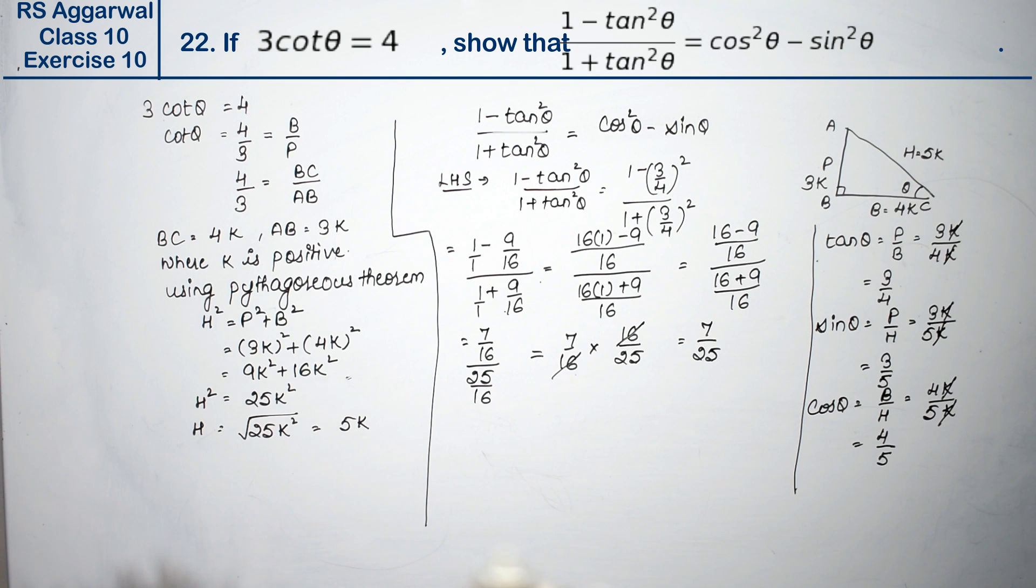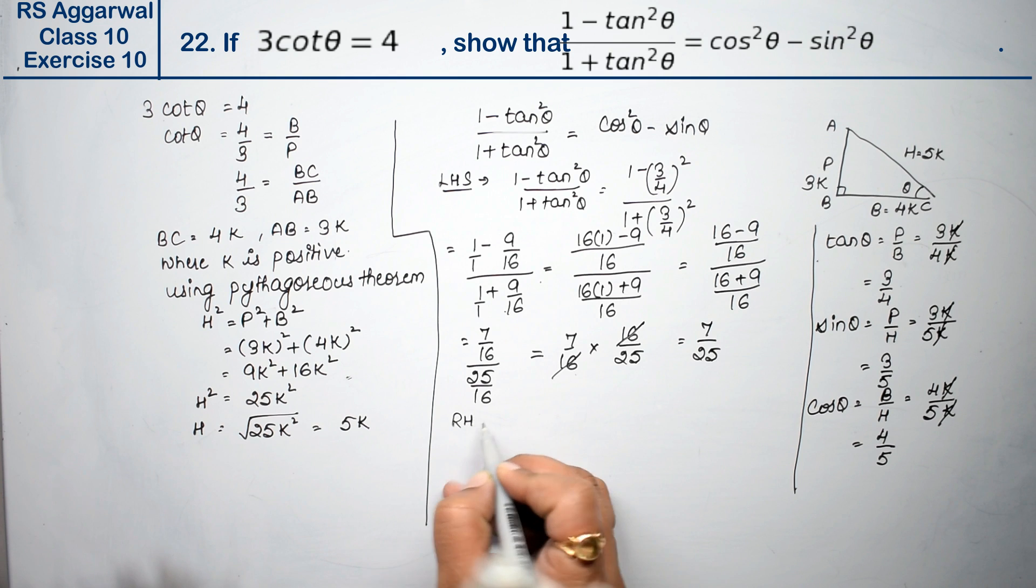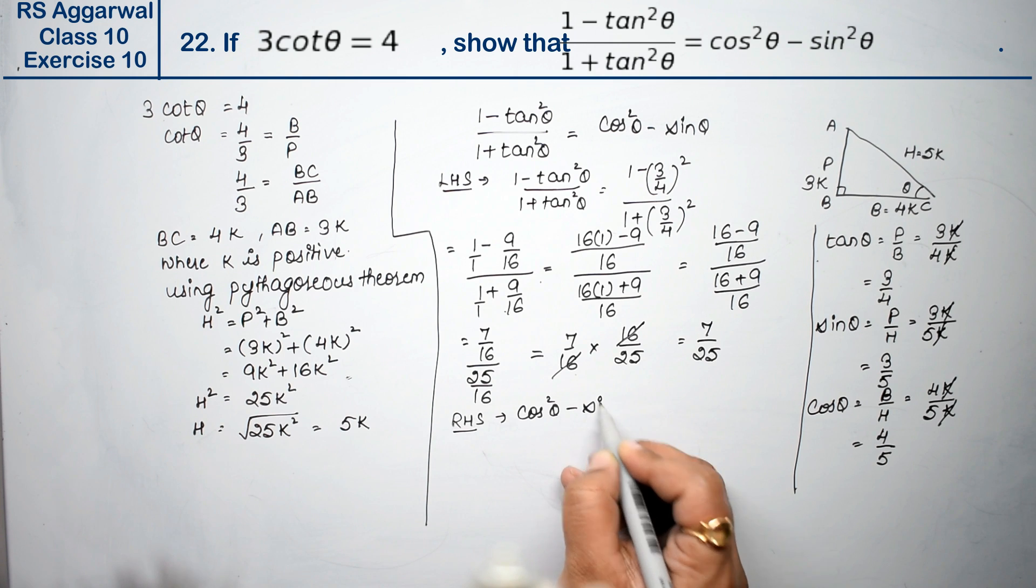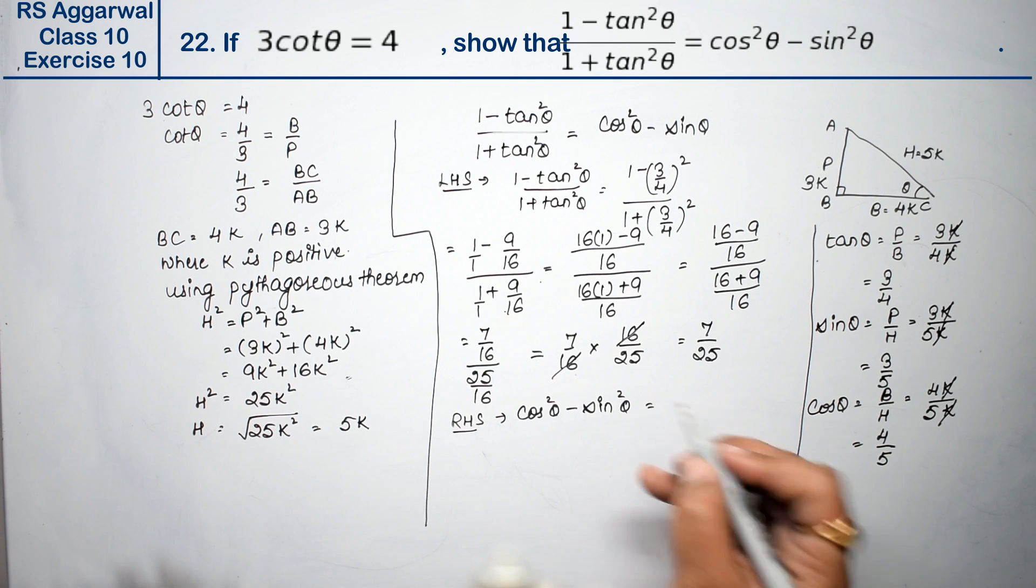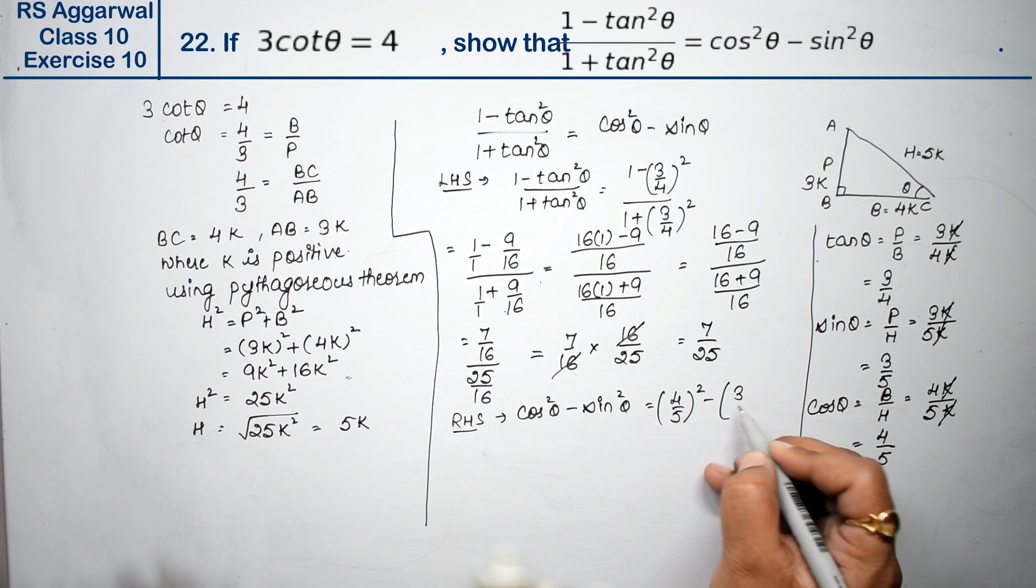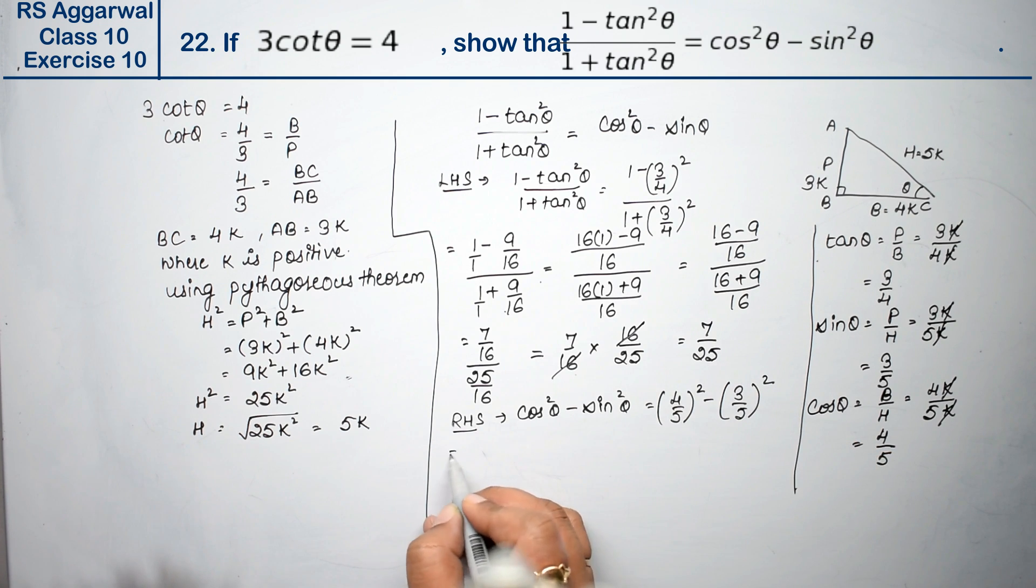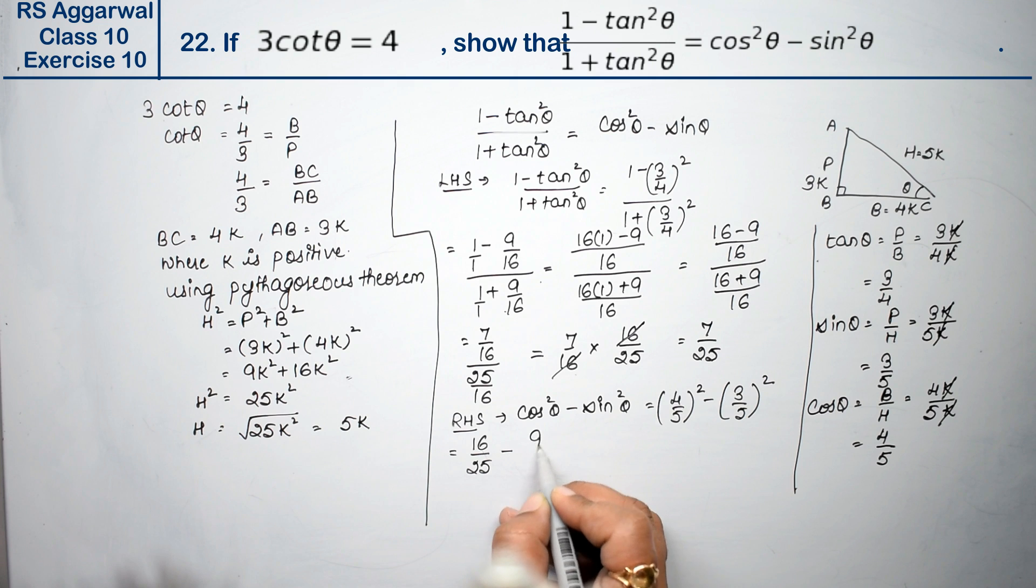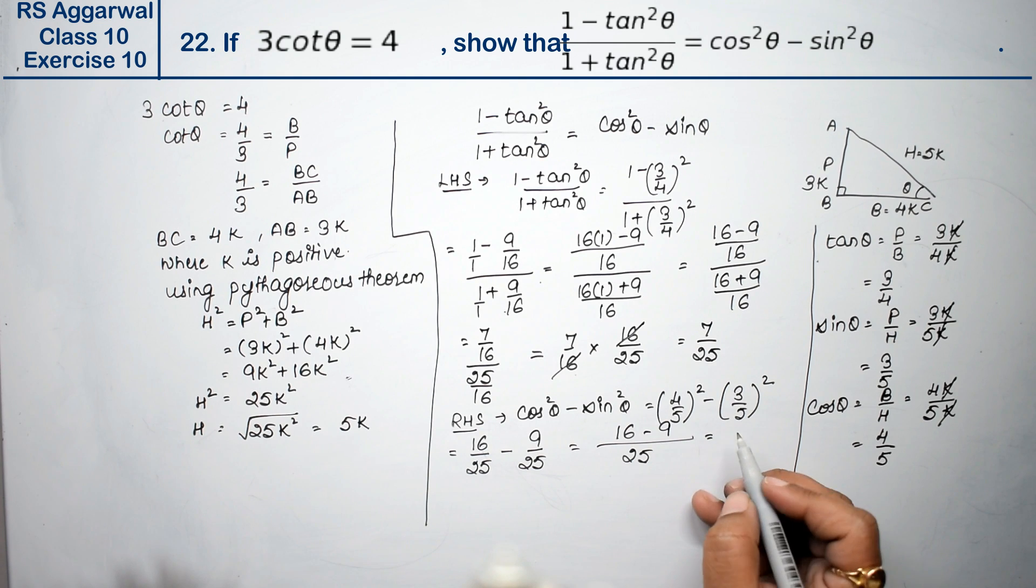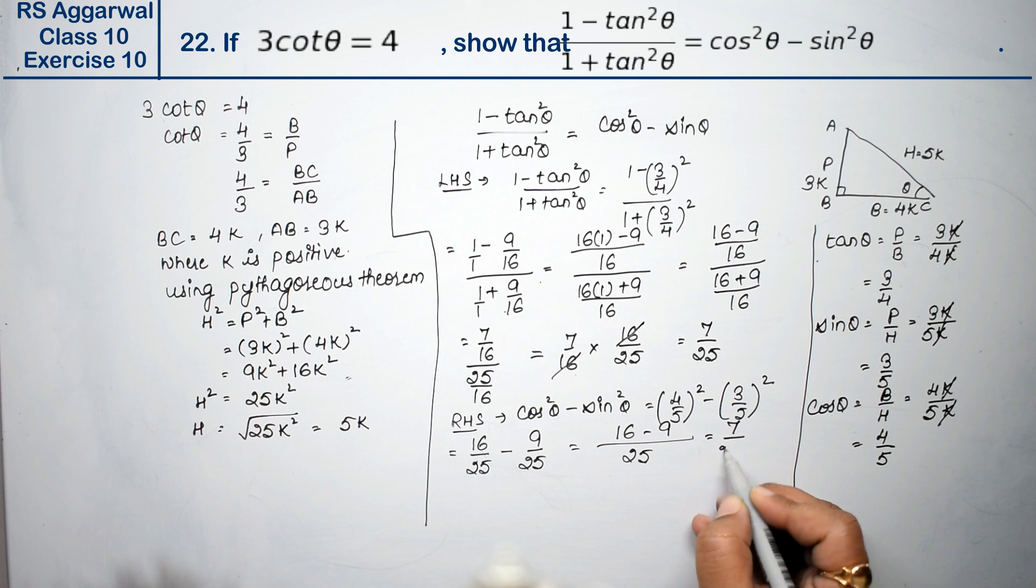Now right-hand side. Right-hand side is cos²θ - sin²θ. cos was 4 upon 5 whole square, minus sin was 3 upon 5 whole square. This is 4 times 4 is 16 upon 5 times 5 is 25, minus 3 times 3 is 9 upon 25. Taking LCM 25, we get (16 - 9) upon 25, which is 7 upon 25.